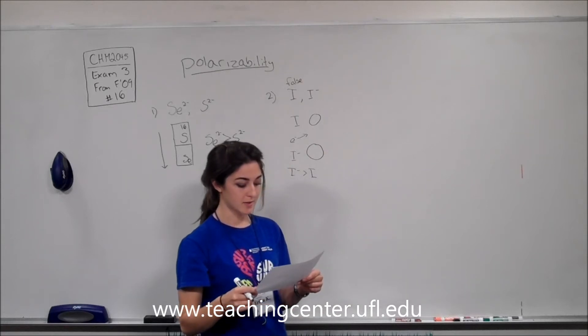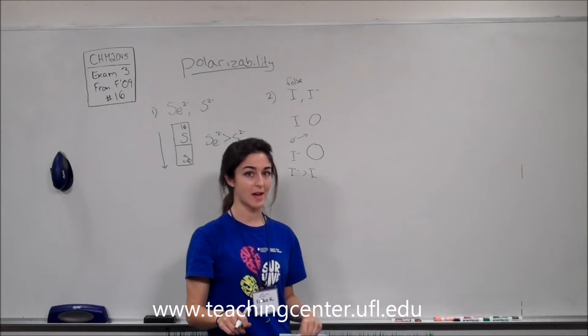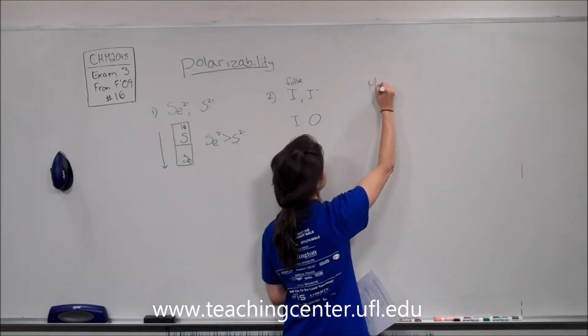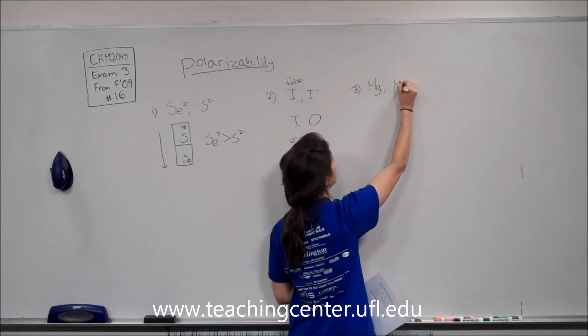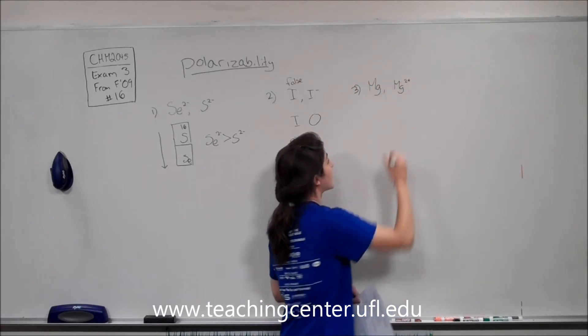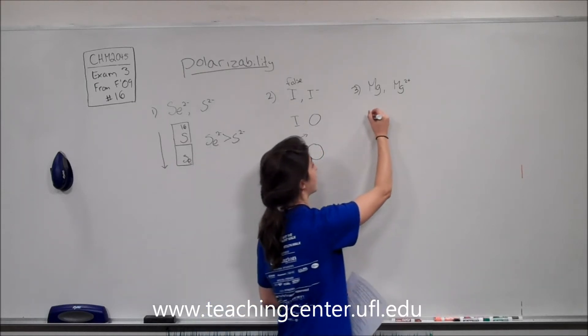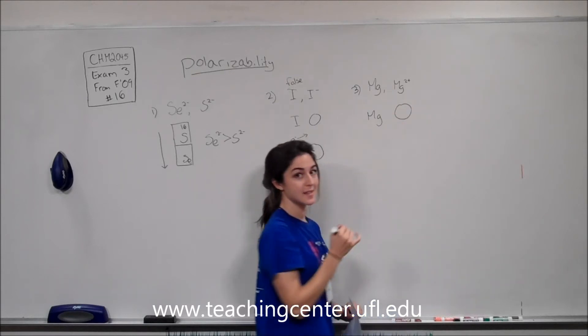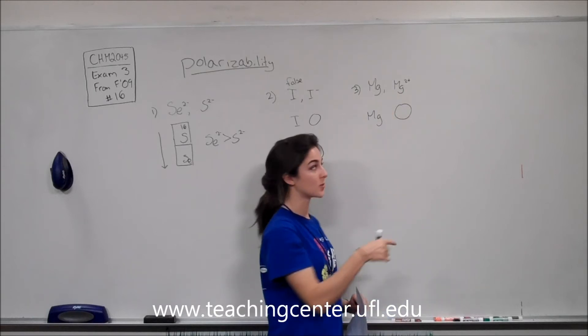So part 3 says we have magnesium 2 plus and the parent atom magnesium. So if we compare magnesium and magnesium 2 plus, we can do the same comparison over here. So here we have magnesium which is say this size. And then the 2 plus charge means that we're taking away electrons.